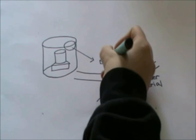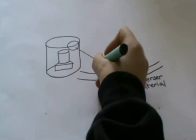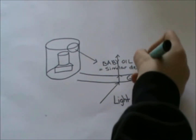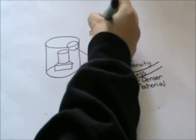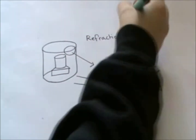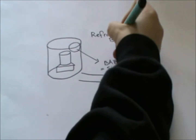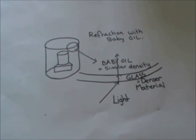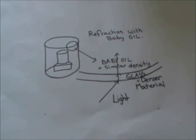However, when we put baby oil into the tubes, they have a very similar density to the glass, so the light is refracted by the same amount. This means that we find it difficult to see the boundary between the glass and oil. So the test tube appears to disappear.